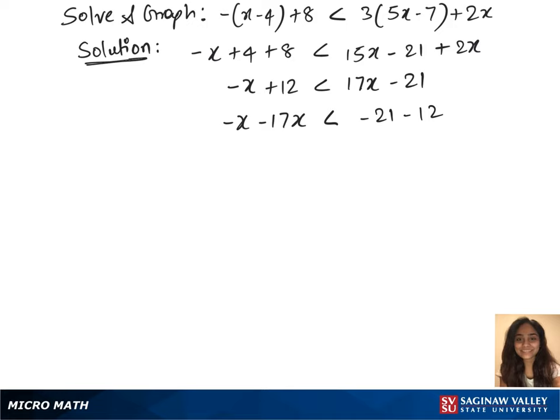And combine the like terms again. So that's minus 18x less than minus 33. Now divide minus 18 on both sides. That gives us x greater than 33 over 18.